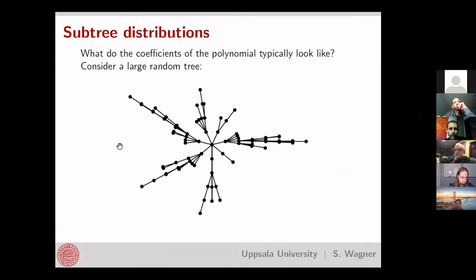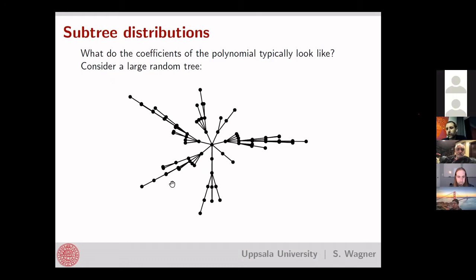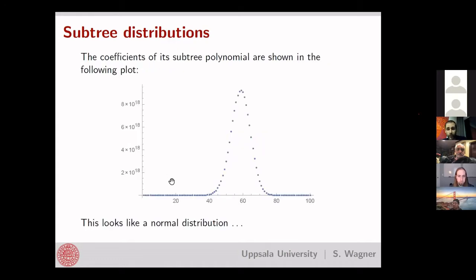What can we say about the distribution of the coefficients in this polynomial? To get some idea, look at a large random tree with 100 vertices and see what the associated polynomial looks like. When you do that, it looks very suspiciously like a normal distribution. It would certainly not be unreasonable to conjecture that for a large tree, the distribution of subtree sizes is close to normal. We will make this more rigorous later on.